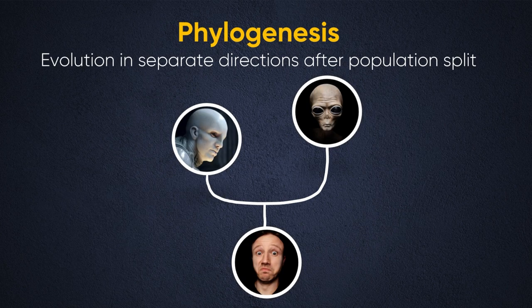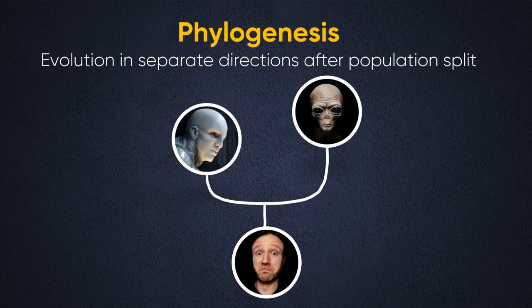Here we have phylogenesis — evolution in separate directions after a population split. There's a fork in the road, and one half of the future human population evolves into these Prometheus-like aliens, and the other half evolves into these gray species-type aliens. Both of these species could actually be living side by side. This might happen, for example, if we become a space-faring species and start colonizing different planets with different selection pressures, so the population evolves down different routes.